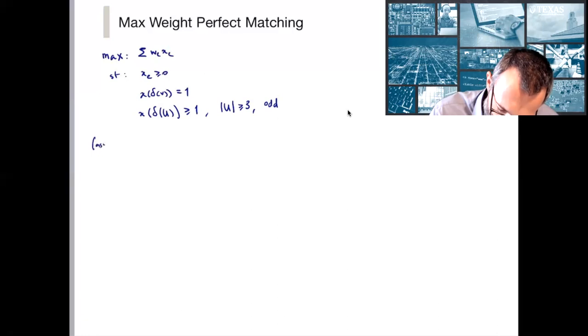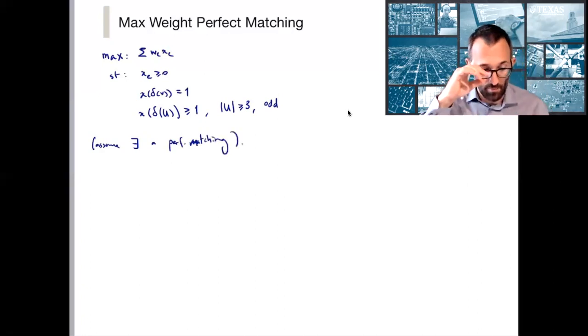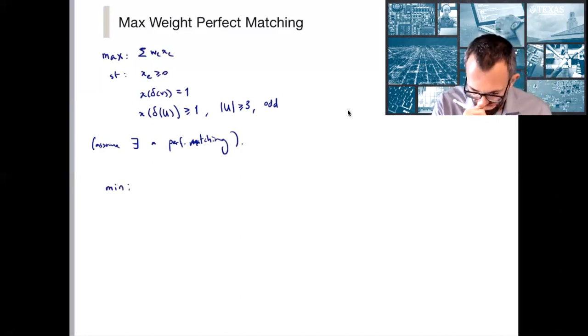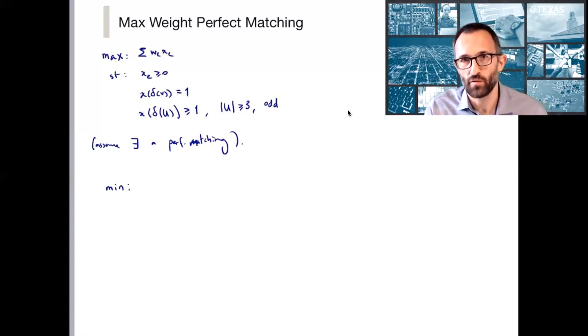Otherwise, because I put equality here for this constraint that requires the existence of at least one perfect matching, it wouldn't be an interesting problem if we didn't have it. So I'm going to assume that there exists a perfect matching, and among all the perfect matchings we're trying to find the one of maximum weight.